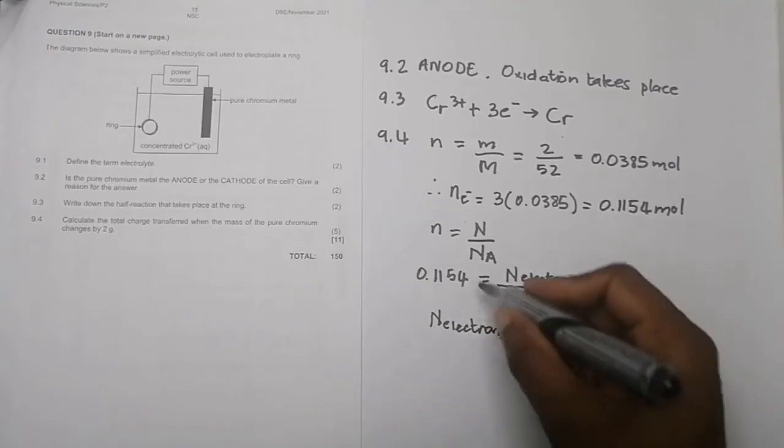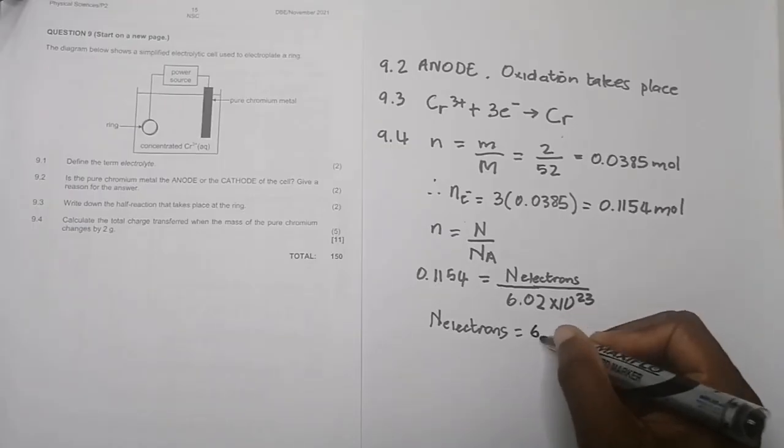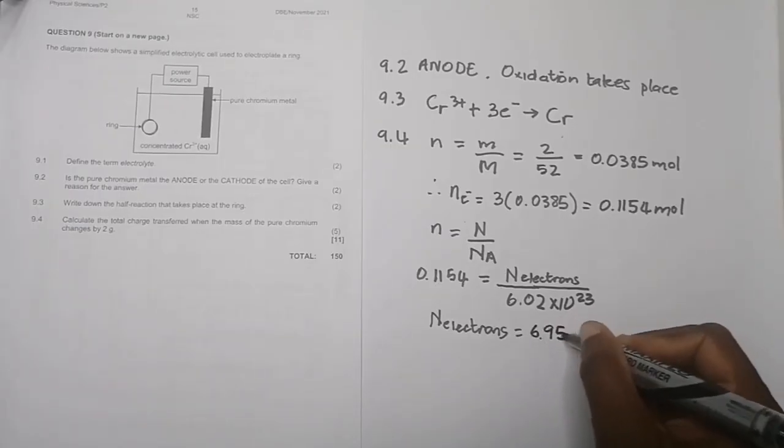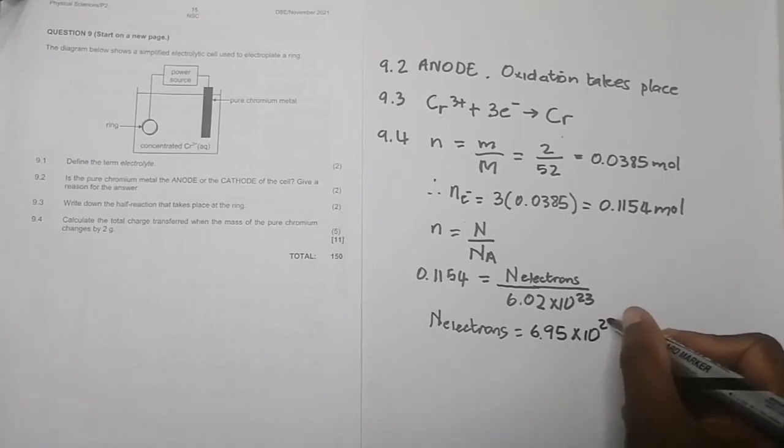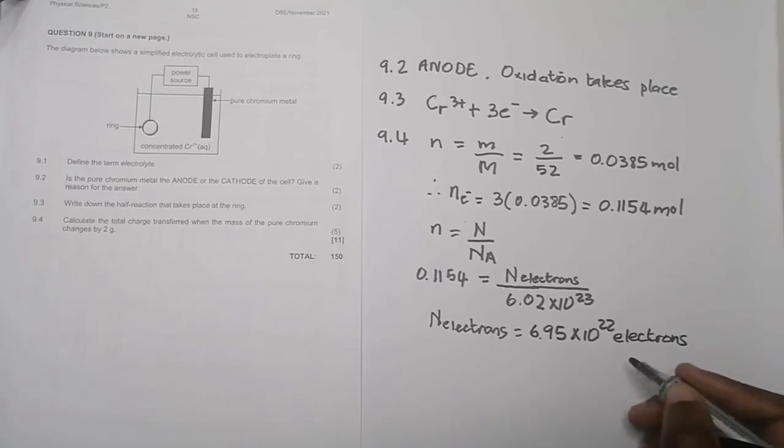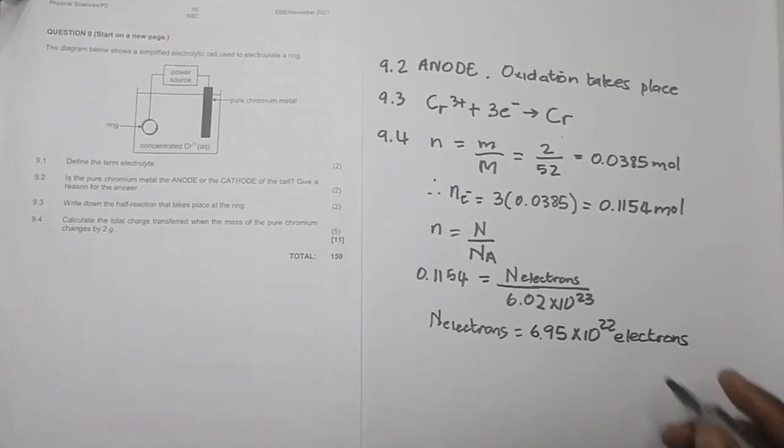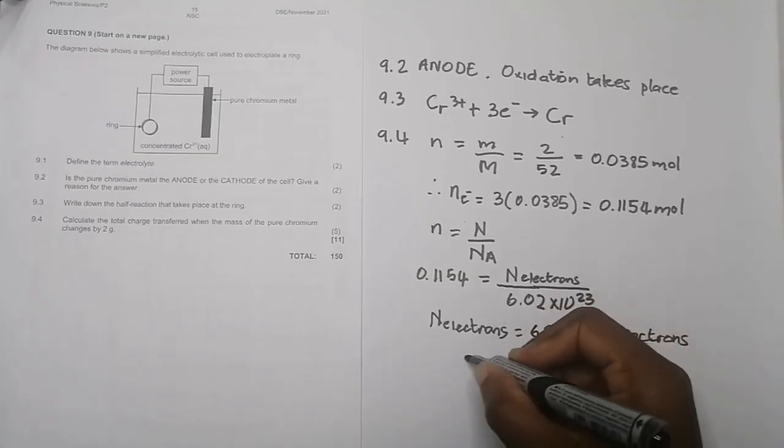All I do is cross multiply, so I'll multiply that value by 6.02 × 10²³. I get an amount of 6.95 × 10²² electrons. Those are the number of electrons that are transferred during that process.